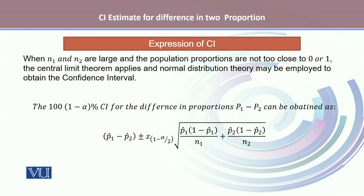We make use of the central limit theorem and assume that the normal distribution theory may be employed to obtain the confidence interval. Hence, 100 times (1 minus alpha) percent confidence interval for difference in proportions can be obtained as P₁ hat minus P₂ hat plus minus Z₁ minus alpha by 2, which is the reliability factor. And since here we are assuming the normal distribution, reliability factor will be obtained from the standard normal distribution. And the standard error of the difference between two population proportions which is given by square root of P₁ hat times (1 minus P₁ hat) divided by N₁ plus P₂ hat times (1 minus P₂ hat) over N₂.